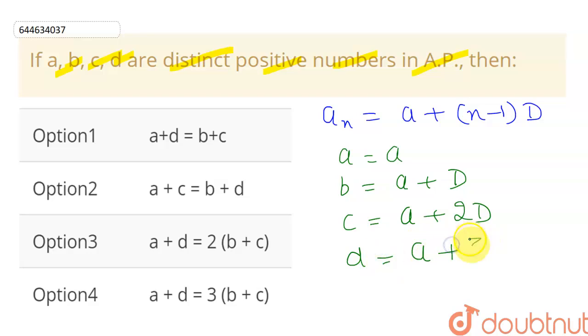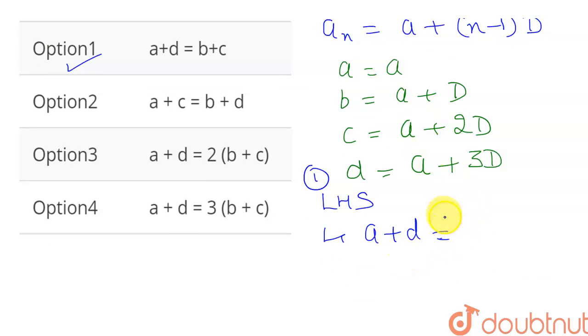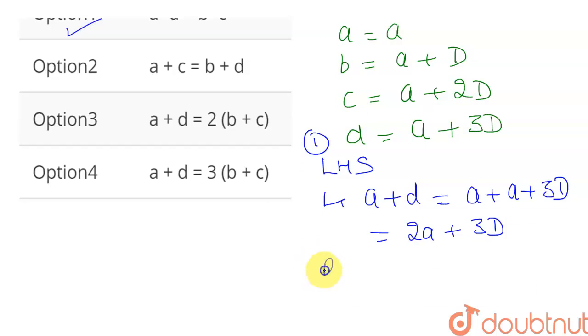Now I can check this option. If I consider option one, let me write its left-hand side first, which is given as a plus d. So this will be equal to—if I write this with the help of the general term of AP—a is a, and d is a plus 3D. So this will be equal to 2a plus 3D. Now let's see the right-hand side.